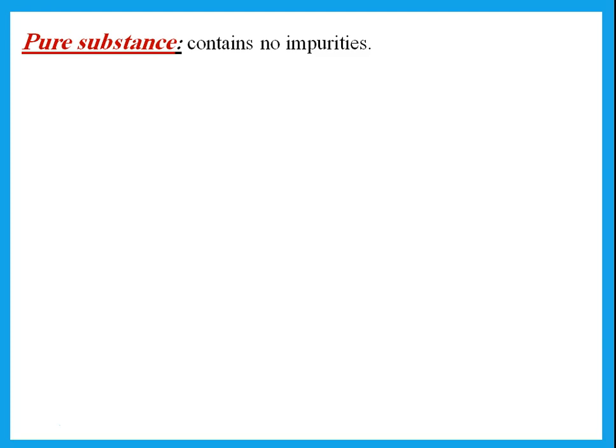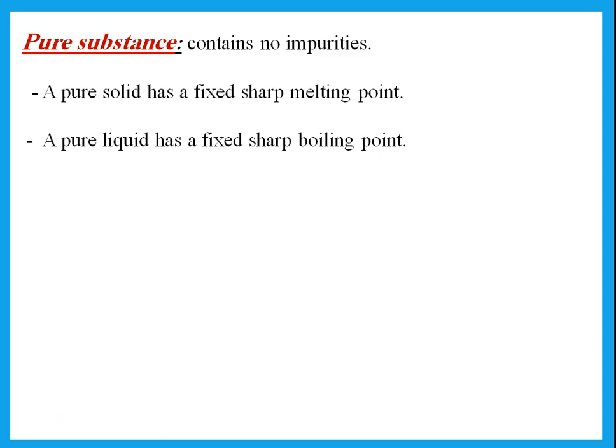A pure substance is something that contains no impurities, or is made up of only one substance — you don't have two or more things. Remember that a pure substance can either be an element or a compound. So if you have only hydrogen, only sodium, or only chlorine, that is a pure substance. But if you have sodium chloride mixed with something else, then it contains impurities.